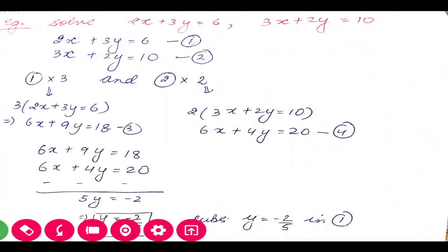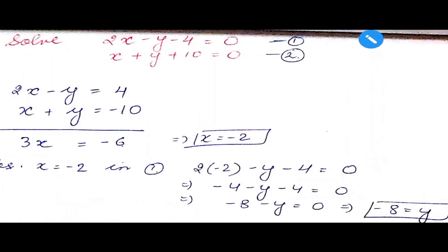Let's move to an easier question: 2x minus y minus 4 equals 0 and x plus y plus 10 equals 0. Never leave the equations in general form — always take the constant term to the RHS. So the first equation becomes 2x minus y equals 4, and the second becomes x plus y equals minus 10. We need to choose a variable whose coefficient is the same or easy to make the same, with opposite signs.